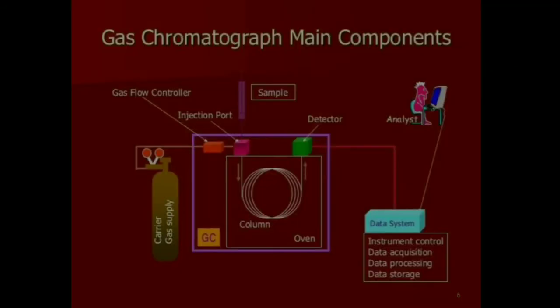Here we have the complete setup of gas chromatography. Starting from the carrier gas supply, which is connected to a gas flow controller. This gas flow controller is connected to a sample injector port, one end of which is connected to the column in the oven. The other end of the column is connected to a detector outside the oven. This detector is further connected to a data system where data acquisition, data processing, and data storing are performed.